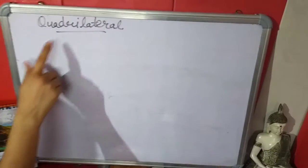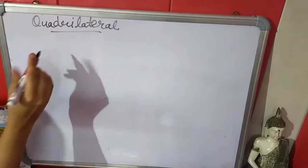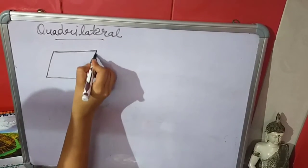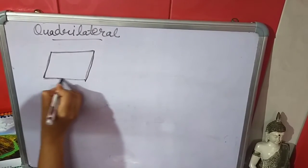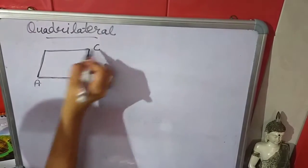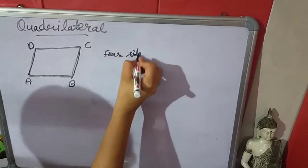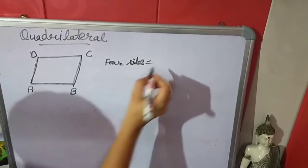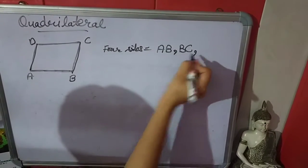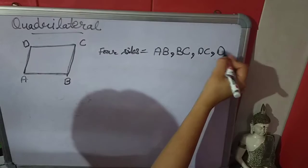Now the next topic is quadrilateral. What is a quadrilateral? A 4-sided polygon is a quadrilateral. It has 4 sides. I am giving the name A, B, C, D. What are the names of the 4 sides? First is AB, second is BC, third is DC, and fourth is DA.